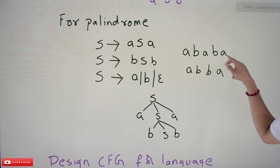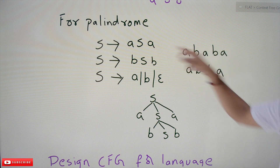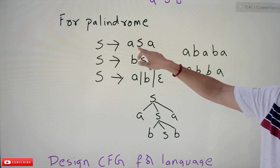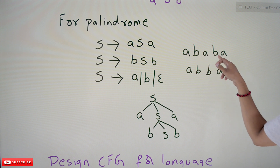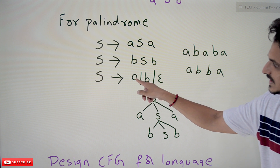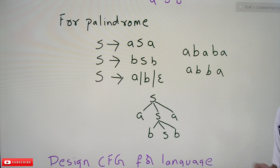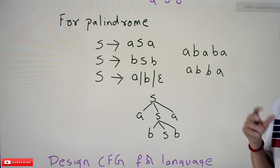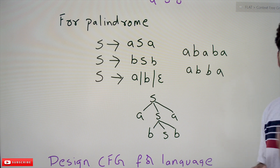So if you take A, this production checks for A on both sides using S, and S calls itself recursively. If the second character is B, it checks B on both sides. In between you can stop using A, B, or epsilon. That is how you write the palindrome context-free grammar.